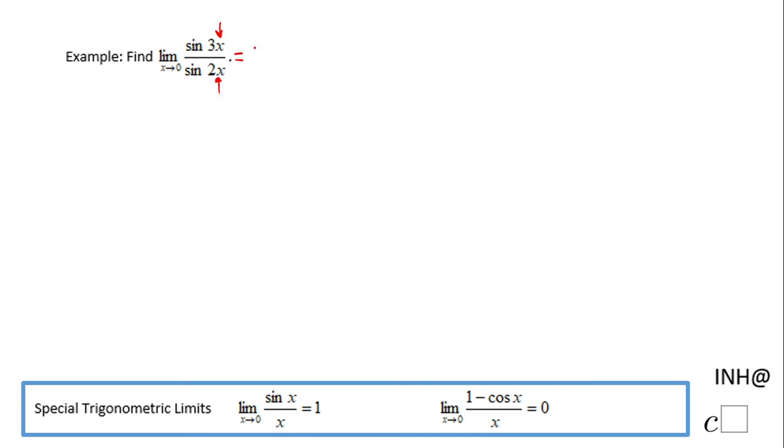you're going to end up with a form like this: zero over zero, which we call an undefined form because we cannot do anything. So what you want to do is use the special trigonometric limit to find the answer for our problem. Let's see how we do that.